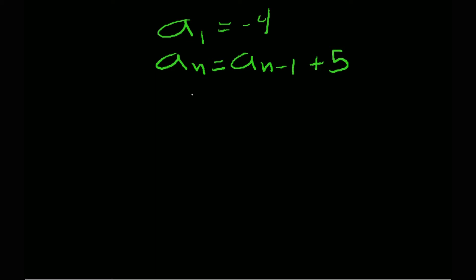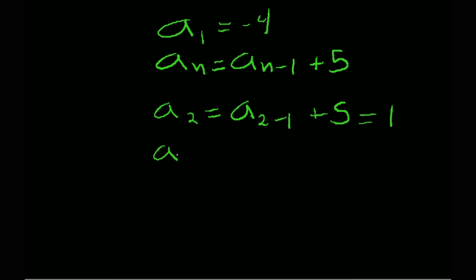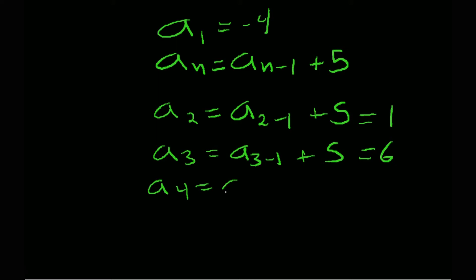The first term is negative 4. For a sub 2, we take the preceding term negative 4 plus 5, which gives us 1. For a sub 3, the preceding term is 1 plus 5, which gives us 6. And for a sub 4, the preceding term is 6 plus 5, giving us 11. So the first four terms of this sequence are negative 4, 1, 6, and 11.